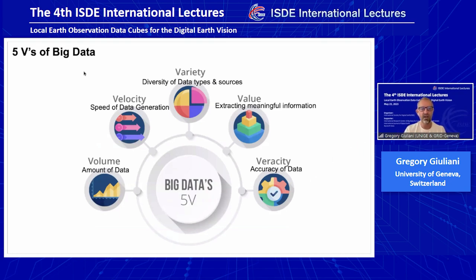We are clearly in the big Earth data area, targeting the five V's: the volume, the velocity at which we generate data, the variety of data we generate with different types of sensors, the value we can extract from these data — it's a huge archive of interesting information we can generate out of satellite data — and obviously the veracity, meaning the accuracy of the data we can generate, which is an important topic.